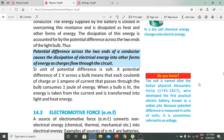Thus, potential difference across the two ends of a conductor causes the dissipation of electrical energy into other forms of energy as charges flow through the circuit. Potential difference across the two ends of a conductor will dissipate electric energy.